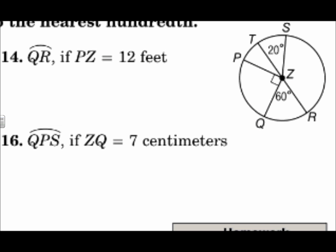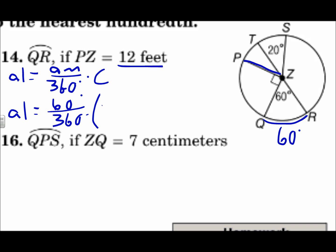For 14, we're looking for the length of arc QR, which is this one. Well, that's the same as the central angle measure for the measure, and it's 60 degrees. So the arc measure is 60 degrees. PZ, which is a radius, is 12 feet. So the circumference will be 2 pi R. So arc length, I'll say AL, equals arc measure AM over 360 times the circumference. The length of the arc equals the measure, which is 60 over 360 times the circumference, which is 2 pi R, and R is 12.